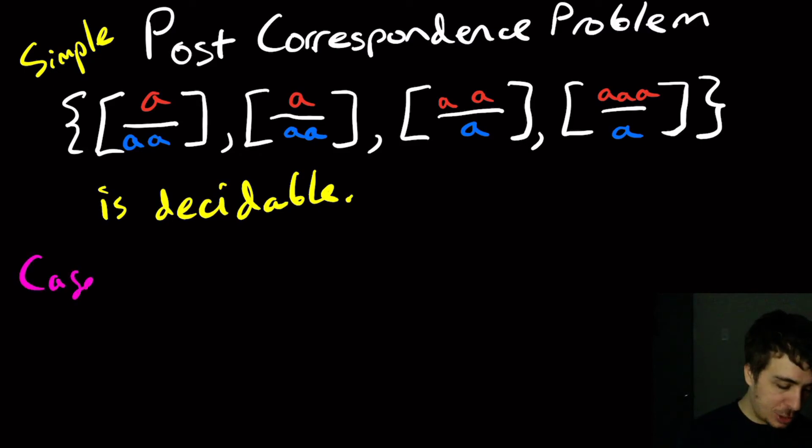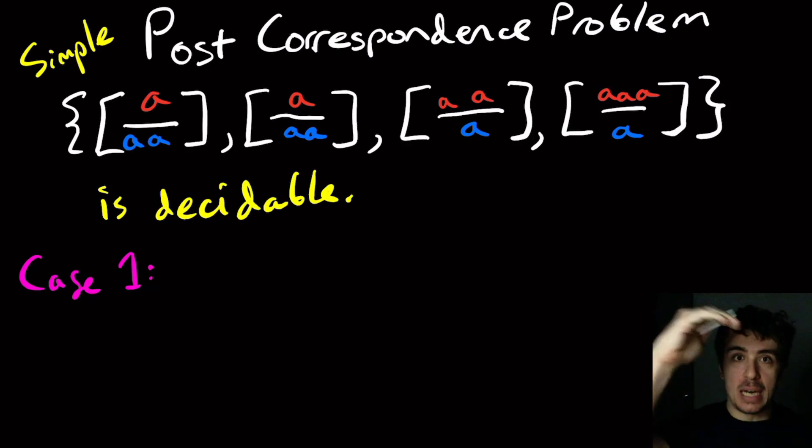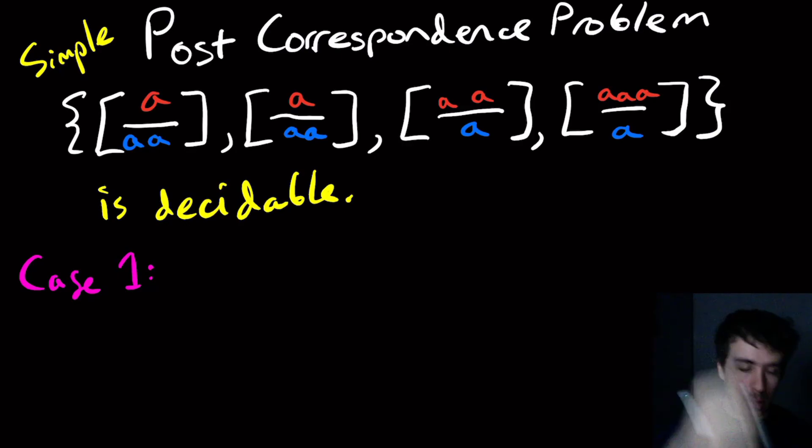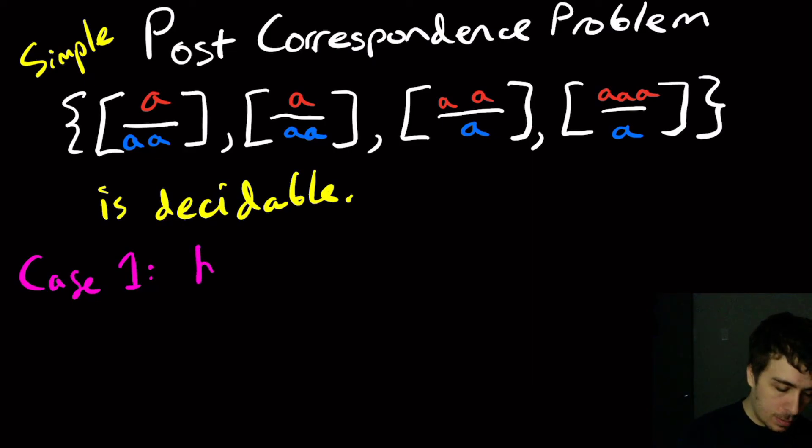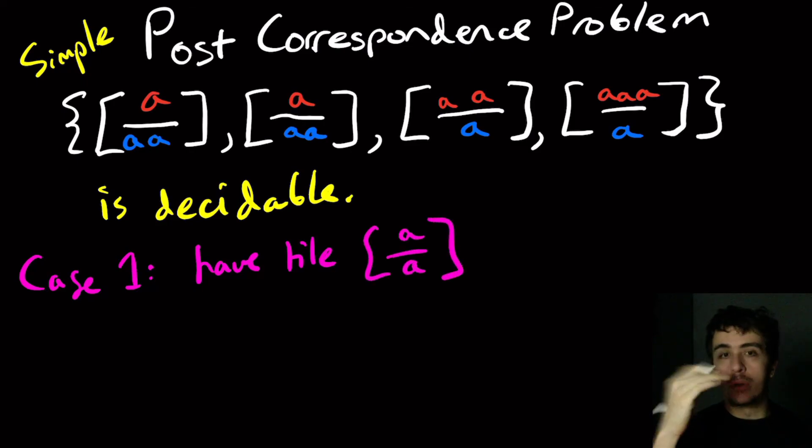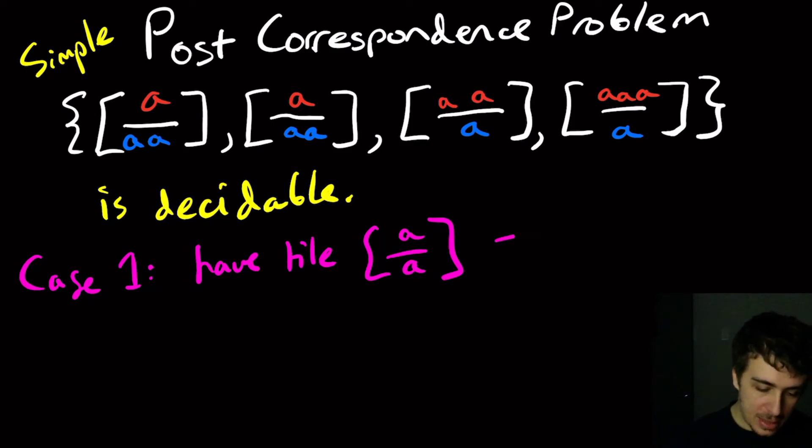So we break it up into cases. Case one: suppose that we have the tile which corresponds to A over A, or really that the length of the top is equal to the length of the bottom. Well, I can just pick that tile and we're done, because the top matches the bottom. So this is a match.